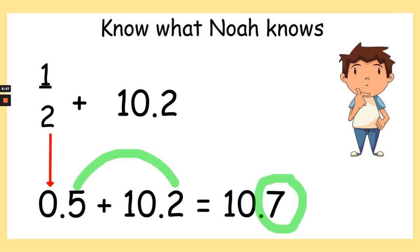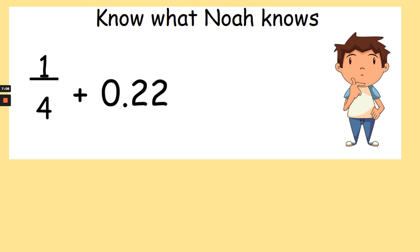Now Noah wants to know what a quarter add 0.22 equals. Pause the video now to write your answer. So a quarter equals 0.25. So we were adding 0.25 add 0.22, and our answer should have been 0.47.